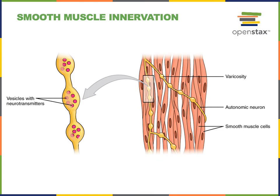Smooth muscles are found in the walls of hollow organs, with the exception of the heart, where cardiac muscle is found. Smooth muscle fibers are spindle-shaped cells, and they do not have striations.